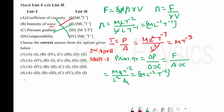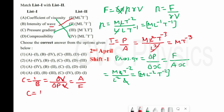Last one is compressibility, which is the reciprocal of bulk modulus. Bulk modulus = ΔP × V₀/ΔV. Since volume and change in volume have the same dimension, they cancel, leaving pressure. Compressibility = 1/pressure = area/force = L²/(MLT⁻²) = M⁻¹LT². So D matches with 3. Option 2 is the right answer.